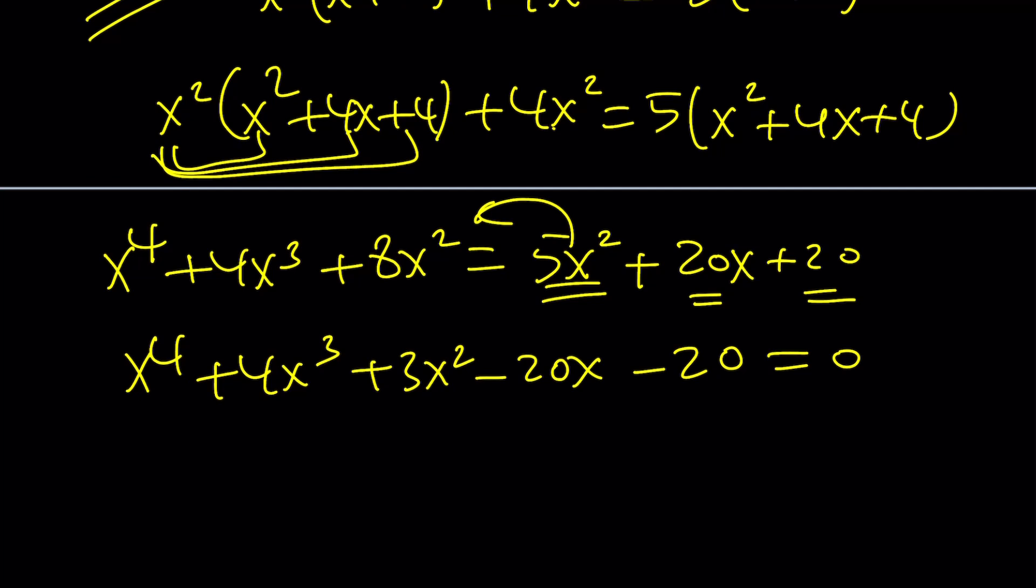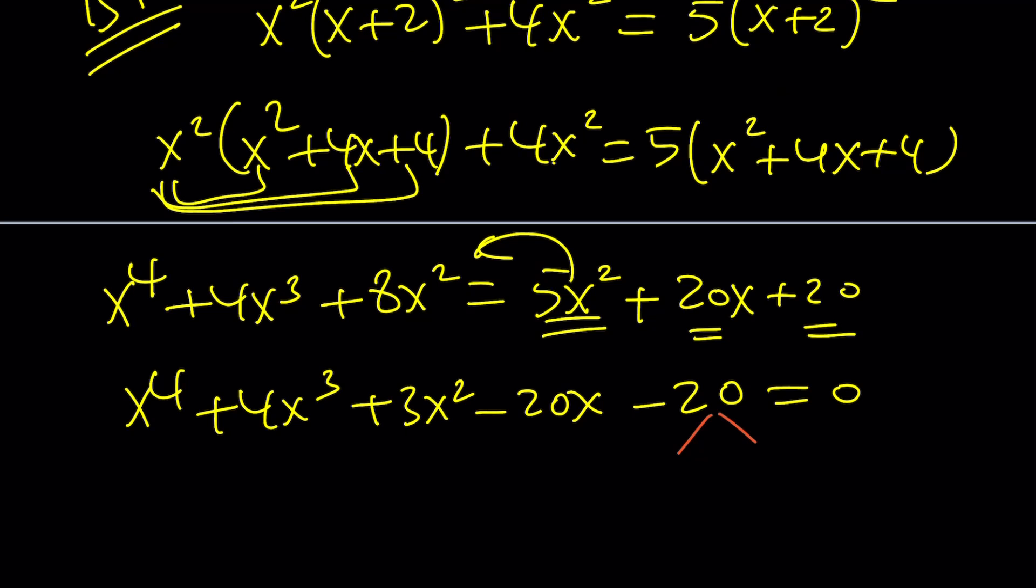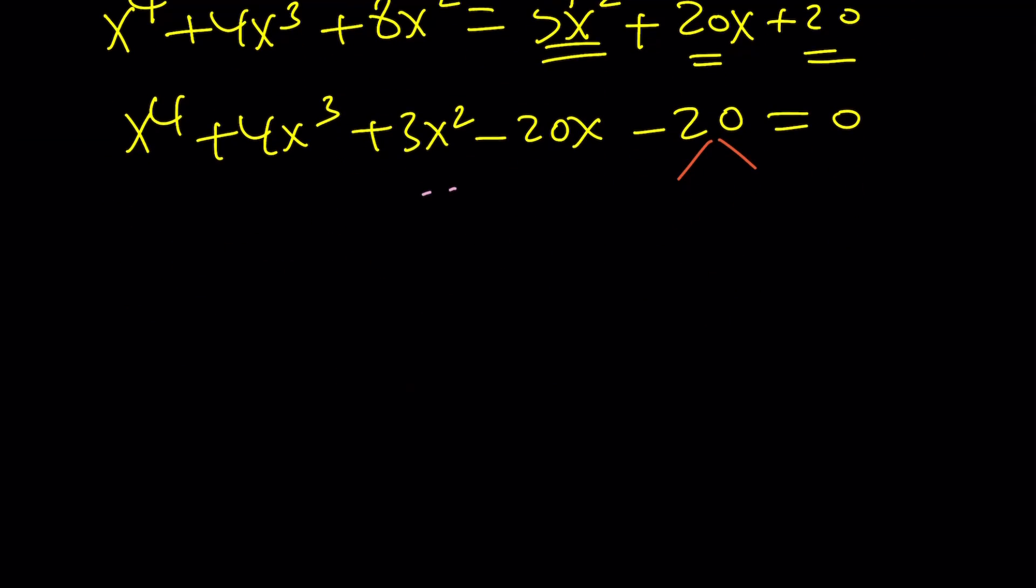You can look at the constant term and check its divisors such as ±1, ±2, ±5 and then test each one out. This is going to take a while obviously. So this is the first method but it's not the best one. I'm just going to leave it like this. Let's take a look at the second method.